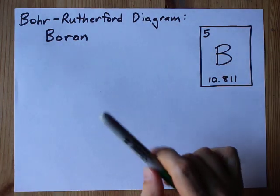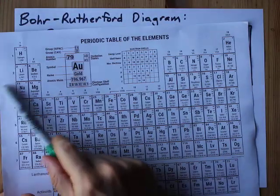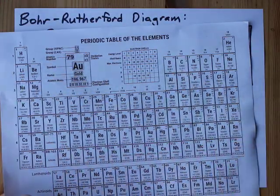Together, let's draw the Bohr-Rutherford diagram for the element boron. On the periodic table, it is the fifth element, third in the second row.